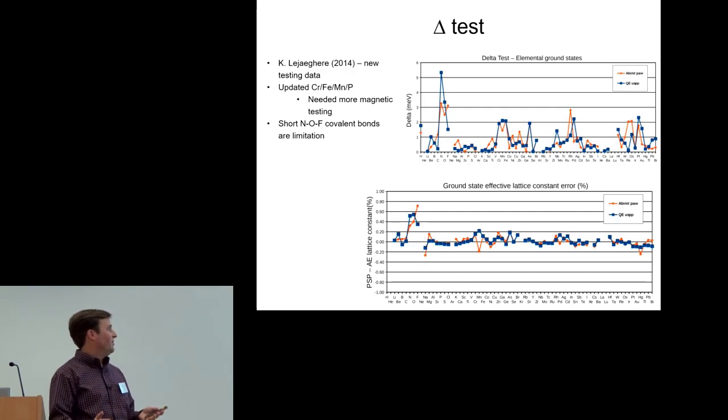I updated those pseudo potentials and PAWs to get at least somewhat better results. This is the delta test for all the different elements, and then this is the lattice constant from the delta test.